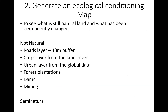We then generated an ecological conditions layer to split what was natural and what was not natural. What we considered not natural included roads, crop plants, urban areas, forest plantations, dams, and mining — pulled out of our 2010 land cover map. Everything else was defined as natural. We also had semi-natural areas, but for this analysis we did not define these separately, so semi-natural went into the natural category.